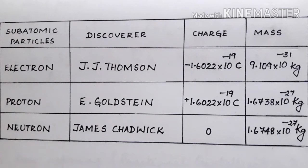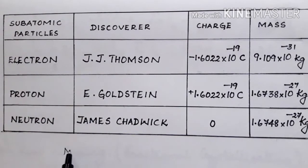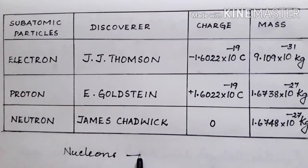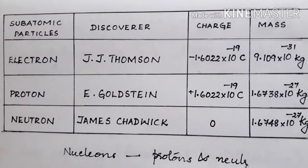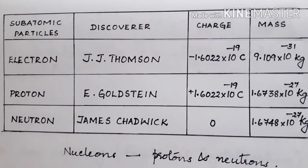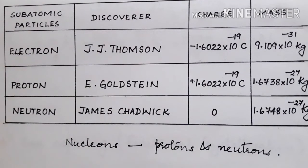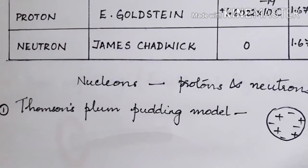Out of these subatomic particles, atoms consist of a positively charged core known as the nucleus. Within the nucleus are the subatomic particles protons and neutrons — together they are known as nucleons. Nucleons are composed of positively charged protons and neutral neutrons. Electrons are found to revolve around the nucleus in certain definite paths called orbits or energy levels.